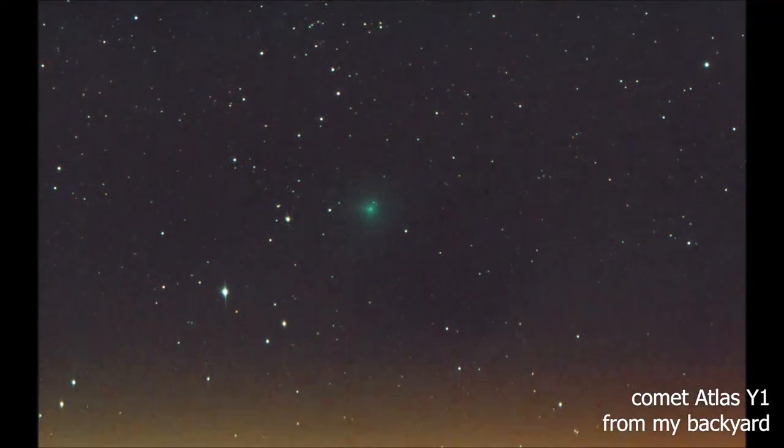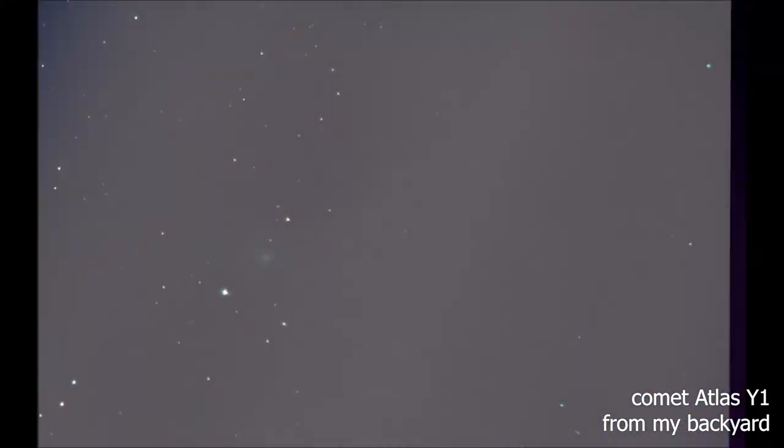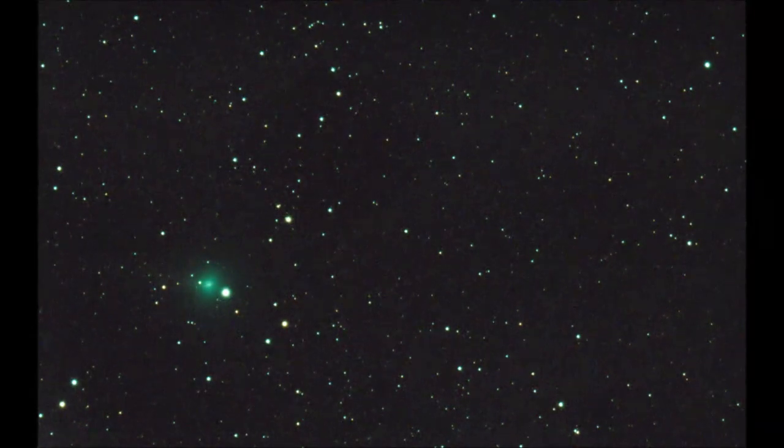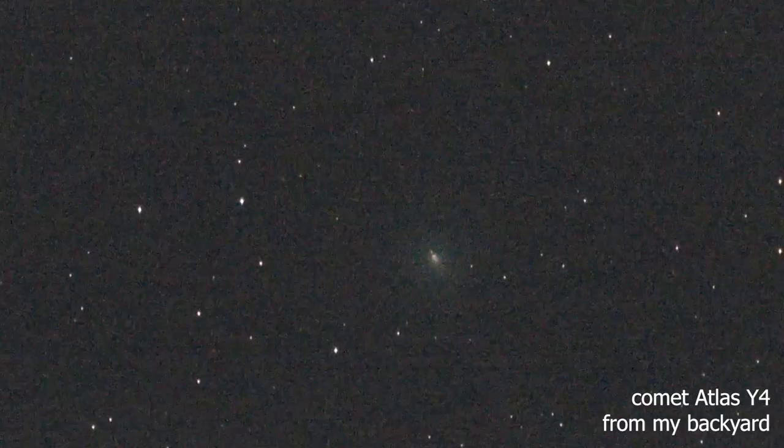If you are using an equatorial mount to track the comet, you can of course try to take longer exposure pictures, as your mount compensates for the Earth's rotation. I personally experimented with taking 30 to 60 second pictures of a comet using my equatorial mount, telescope and camera. I usually try to track comets for a couple of hours, so I'll end up with hundreds of pictures.